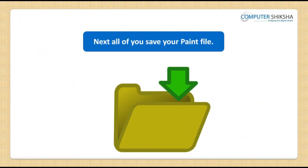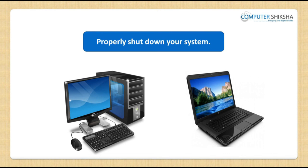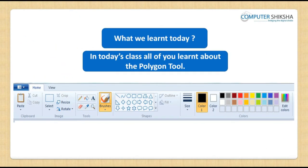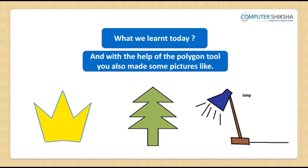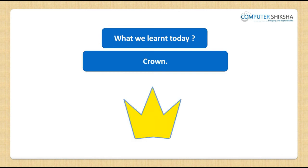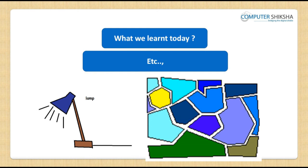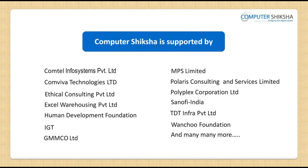Now all of you need to save your file and properly shut down your system. In today's class all of you learned about the polygon tool, and with the help of the polygon tool you also made some pictures like a box, crown, tree, etc.